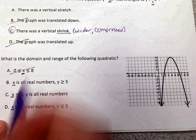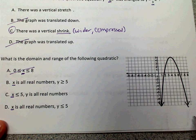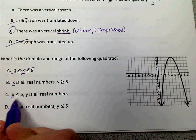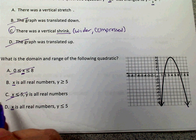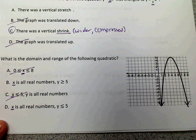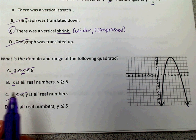We know that your domain is always all real numbers. This says that it's less than or equal to five and that y is all real numbers. That's not true. We know that x is going to be all real numbers. So now we've narrowed it down to b and d.